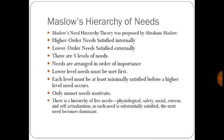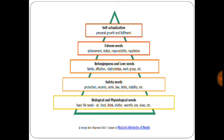The first theory is Maslow's hierarchy of needs, proposed by Abraham Maslow. Maslow has divided five levels of need. Higher-order needs are satisfied internally and lower-order needs are satisfied externally. Needs are arranged in order of importance; lower-level needs must be met first, and only unmet needs motivate. The levels are: biological and physiological needs, safety needs, belonging and love needs, esteem needs, and self-actualization. Whenever lower-level needs are satisfied, the person moves to the higher-order level.